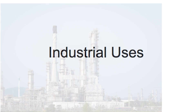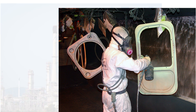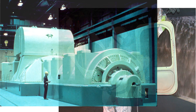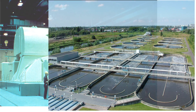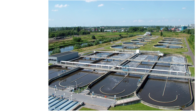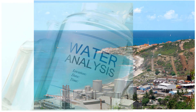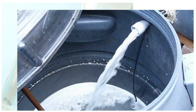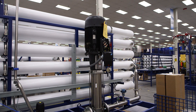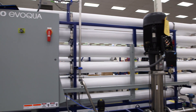Industrial uses include boiler feedwater treatment, preparation of parts for painting or other coatings, nitrous oxide removal from peaking electrical generators, and wastewater recovery. Municipal uses include desalinization of seawater, improvement of municipal water quality, and greywater reuse. RO systems can be configured to meet a wide range of water use and space requirements.